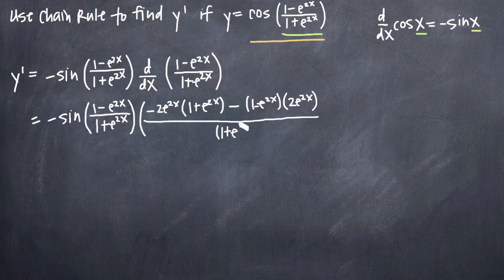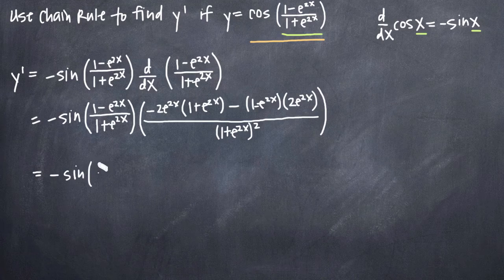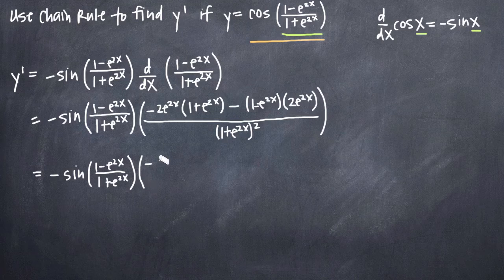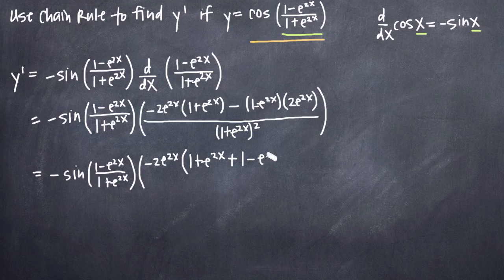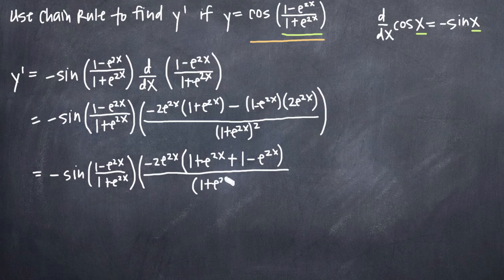The denominator of our derivative is the denominator of our original function squared: 1 plus e to the 2x squared. Now it's just a matter of simplifying. We have negative sine of the quantity 1 minus e to the 2x divided by 1 plus e to the 2x. Looking at the second part, notice that we have a common factor of negative 2e to the 2x that we can factor out, multiplied by 1 plus e to the 2x, plus 1 minus e to the 2x, all divided by 1 plus e to the 2x squared.